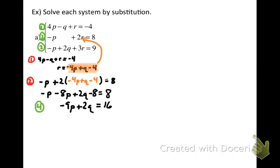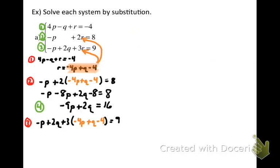Now I have two equations with two variables — equations 2 and 4 — but they're not the same two variables. Remember I said to substitute the isolated variable into both of the other equations. So now we take the third equation and replace R there with negative 4P plus Q minus 4. After distributing the 3, I have negative P plus 2Q plus minus 12P plus 3Q minus 12, all equal to 9. Before simplifying, notice that my fourth equation only had P's and Q's, and now this equation also only has P's and Q's.